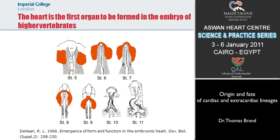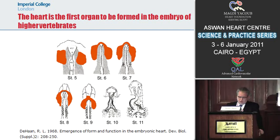This first functional organ certainly doesn't look like a mature heart at this stage, and a lot of different morphogenetic processes have to take place to transform this primitive blood-pumping structure into a four-chambered myocardium. One of those processes shown here is heart looping — the transformation of this linear heart tube into a different anatomical configuration.